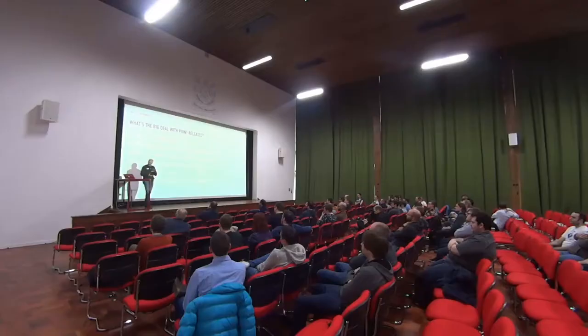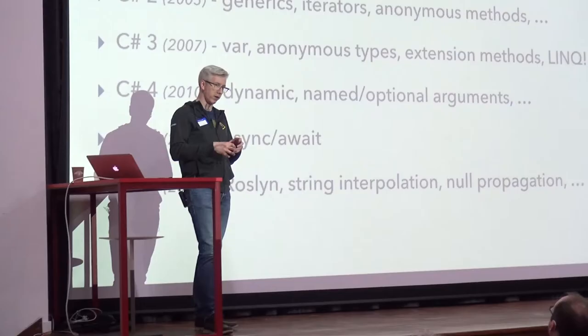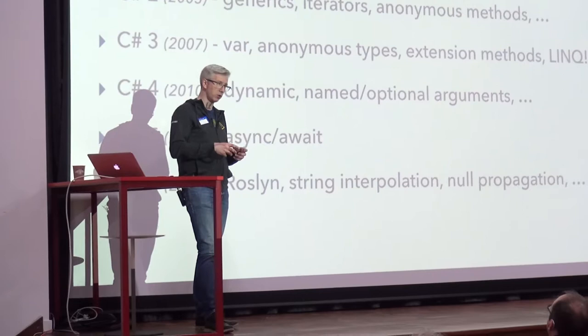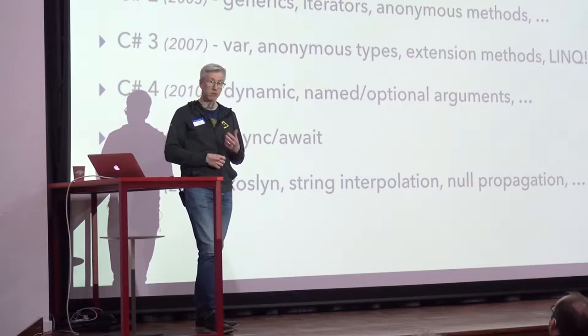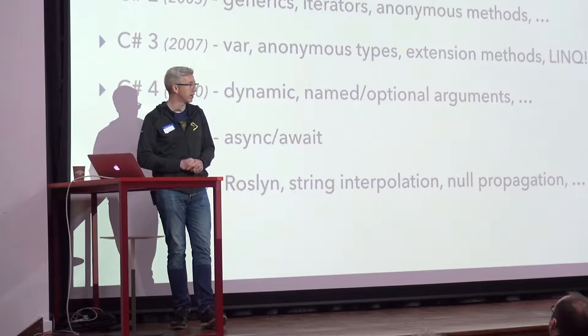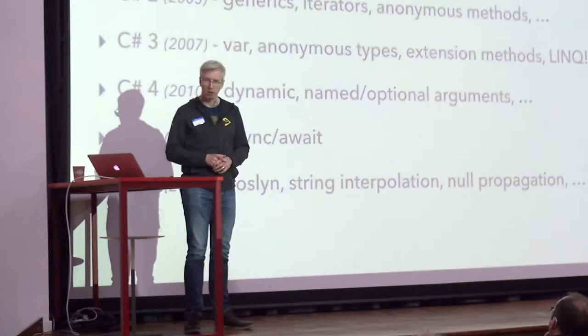With C# 4 and 5, the number of features were slowing down and getting smaller, because of the age of the code base — C++ and old — and they needed to rewrite it. So they spent several years rewriting it. That was C# 6 with Roslyn: everything rewritten in C# — new, easy to extend — and they got a whole load of new features in C# 6.